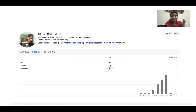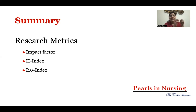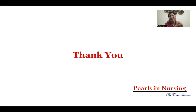To summarize: we talked about impact factor and 5-year impact factor, H-index, and I-10 index. Impact factor tells about the importance or impact of the journal, whereas H-index and I-10 index tell about the quality of the researcher. That's it for today — thank you so much.